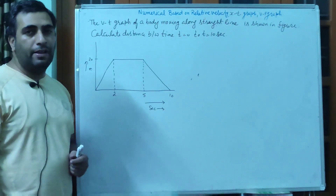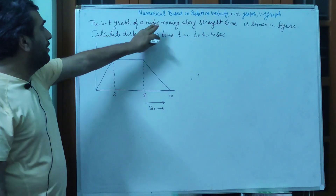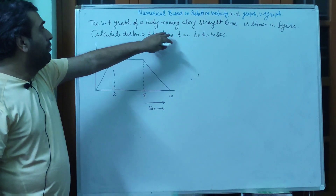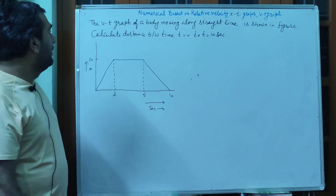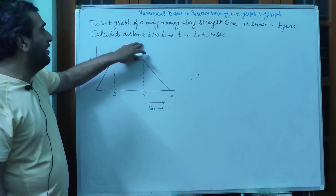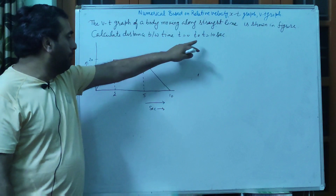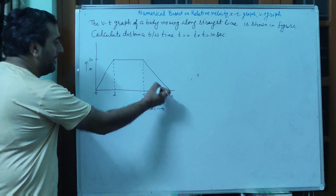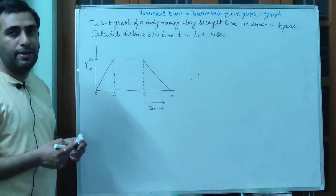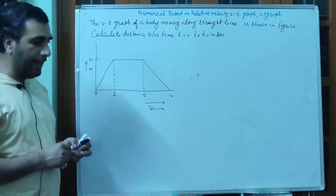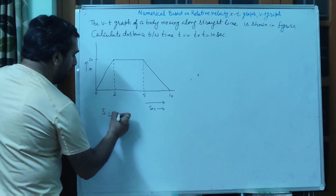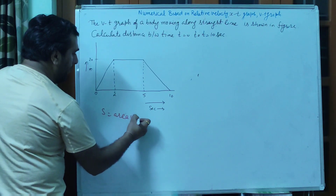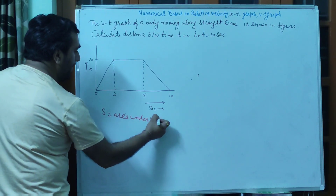Next question is also velocity-time graph से related है। The velocity-time graph of a moving particle along the straight line is shown in this diagram. You have to calculate the distance between T = 0 to T = 10 seconds, यानि के 0 से लेके 10 second तक body ने कितना distance cover किया। Again formula: distance is equal to area under VT graph।